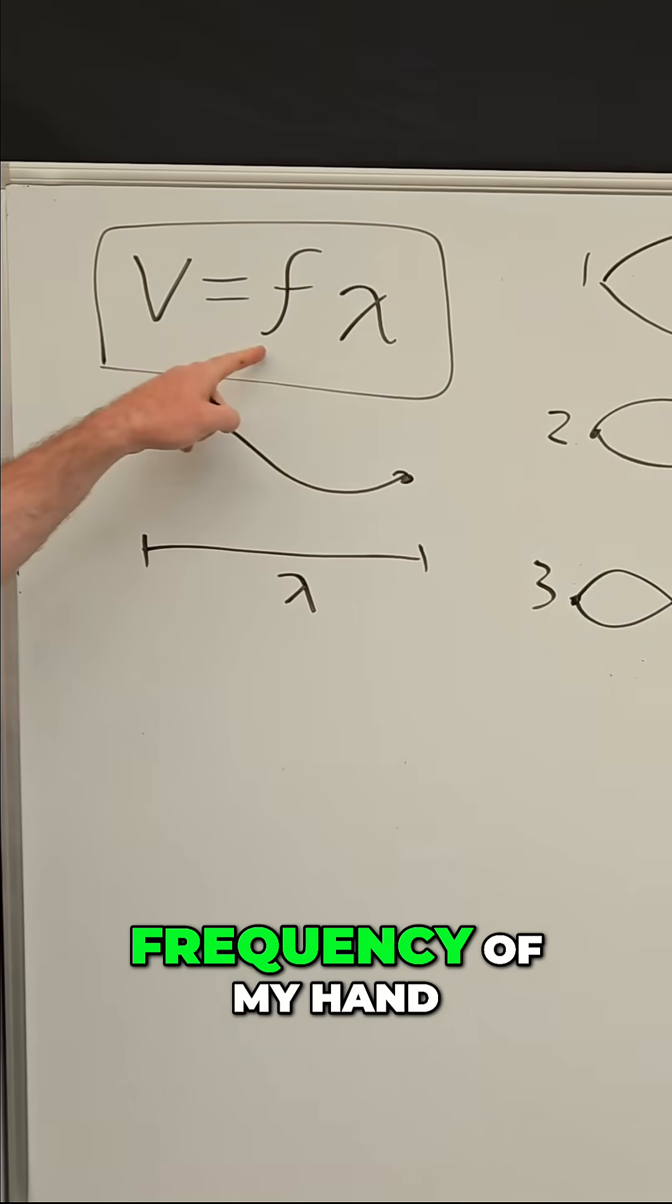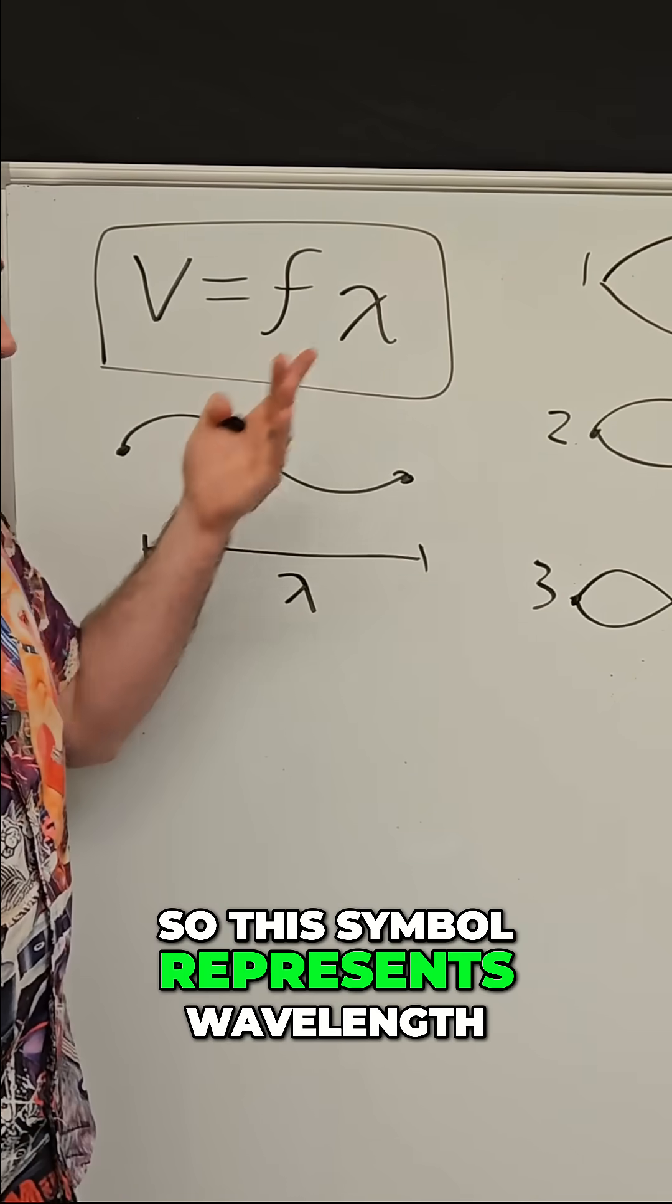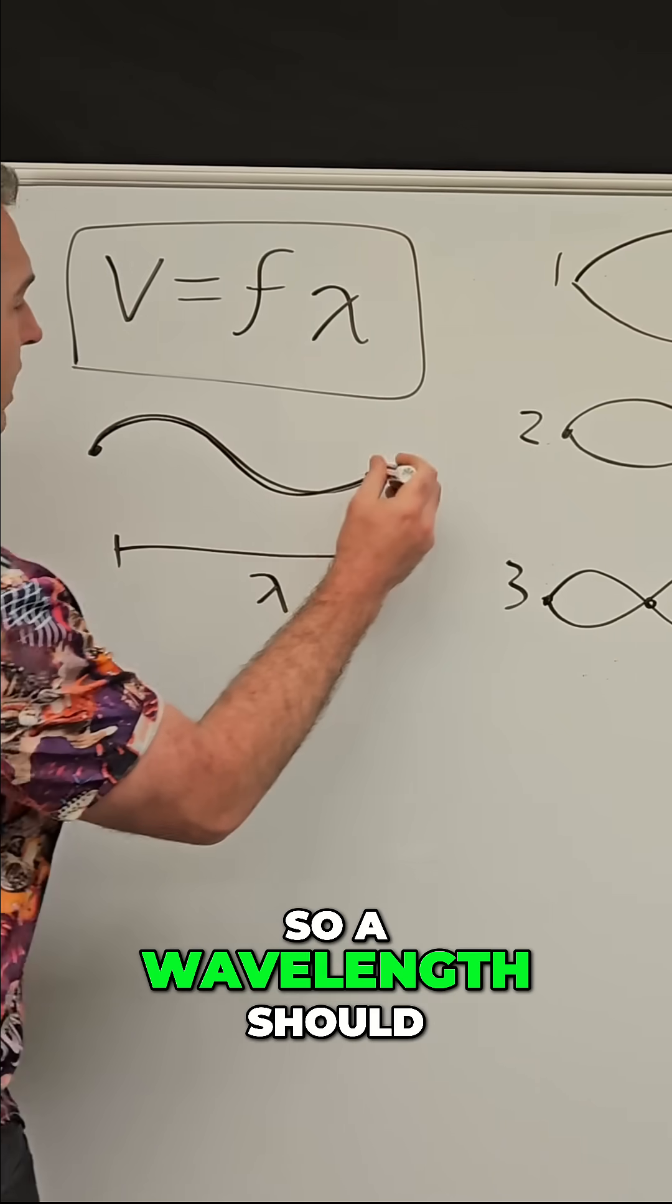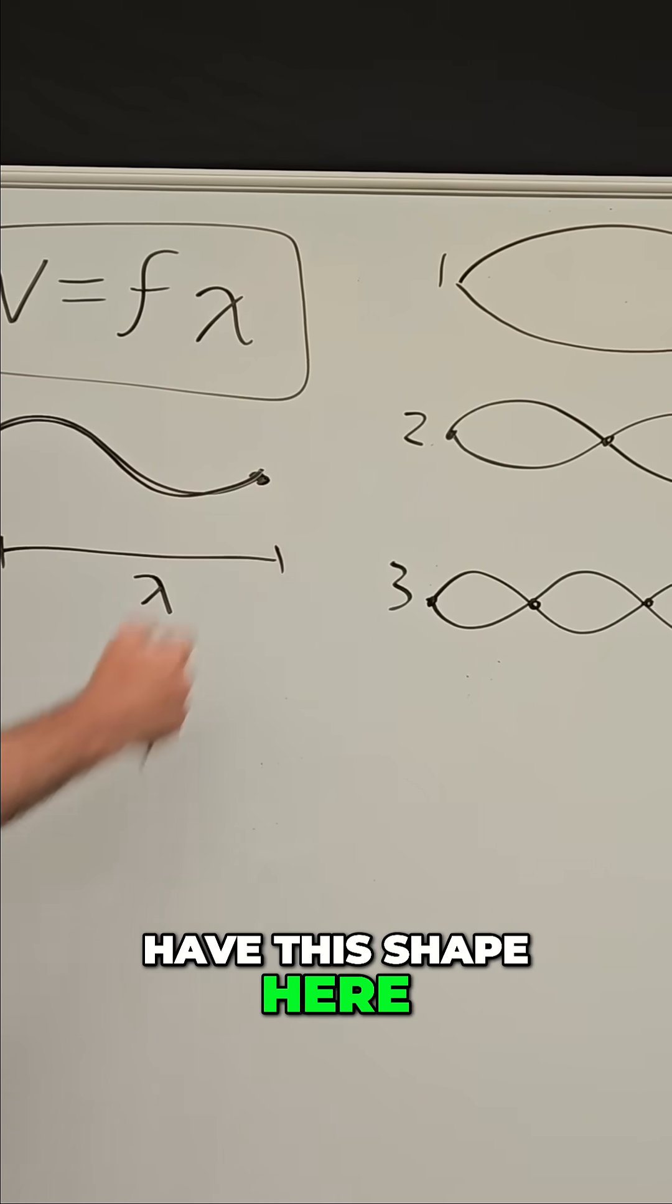And it's just the frequency of my handshakes multiplied by the wavelength. So this symbol represents wavelength. So a wavelength should be one crest, one trough, and so it would have this shape here.